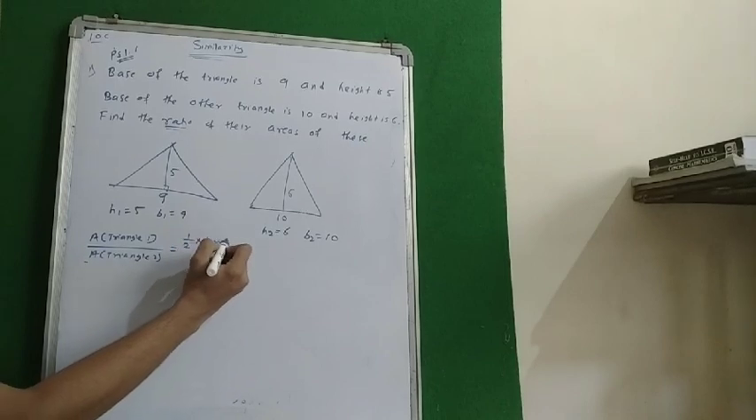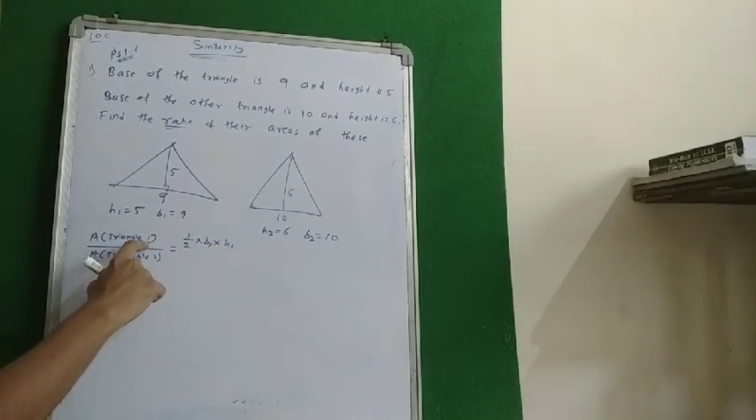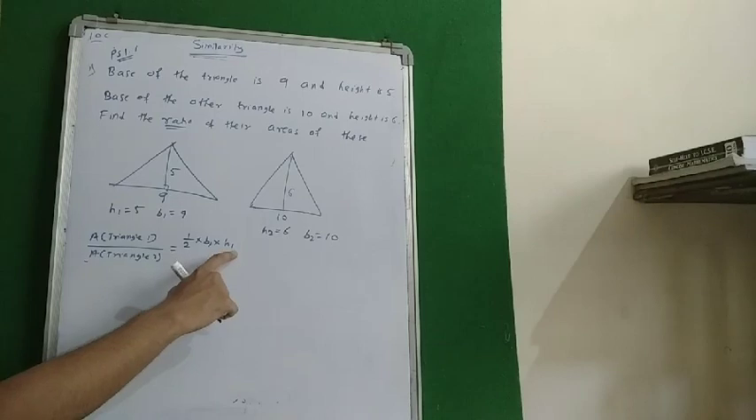What is the formula of the area of the triangle? The formula is half into base into height. As it is the first triangle, I wrote it B1 and H1. If you want to name this triangle you can name it ABC or PQR, but if you write it like this it is okay. Area of the first triangle upon area of the second triangle, half-half gets cancelled.